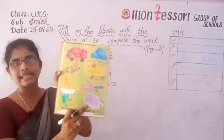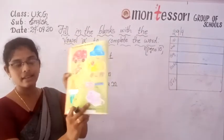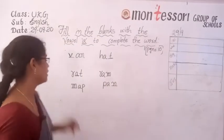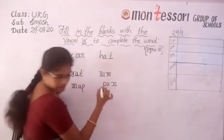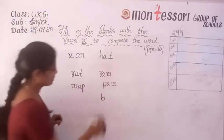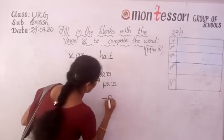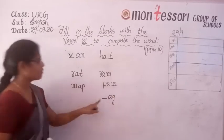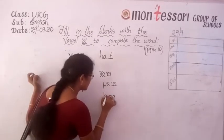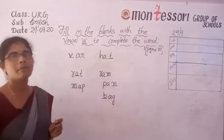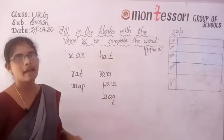Now what is this picture? Basket? Balloon? It is a bag. They have given dash-A-G. What we have to write here? B. B-A-G, bag. Have you all completed this one?